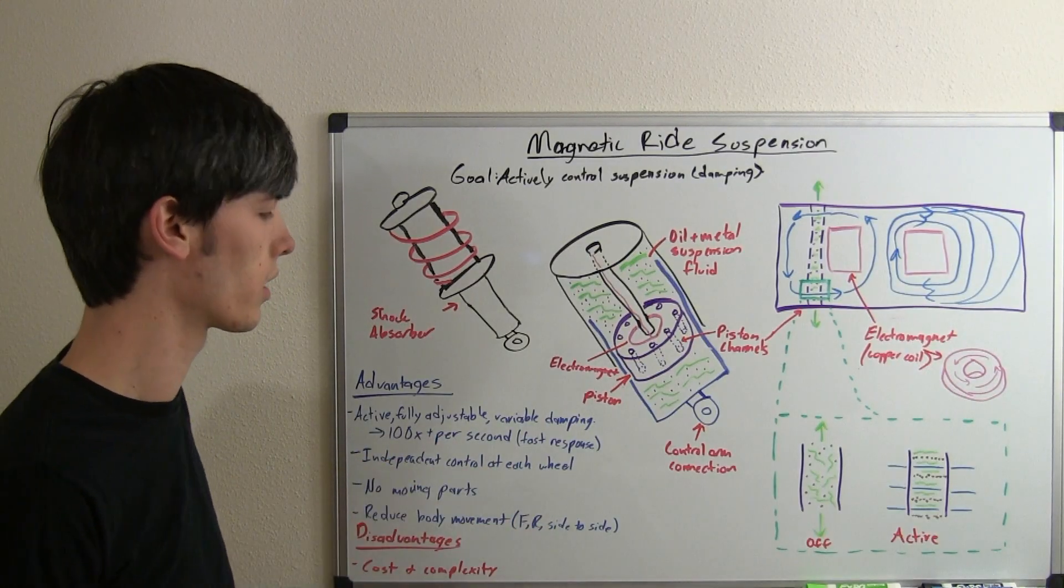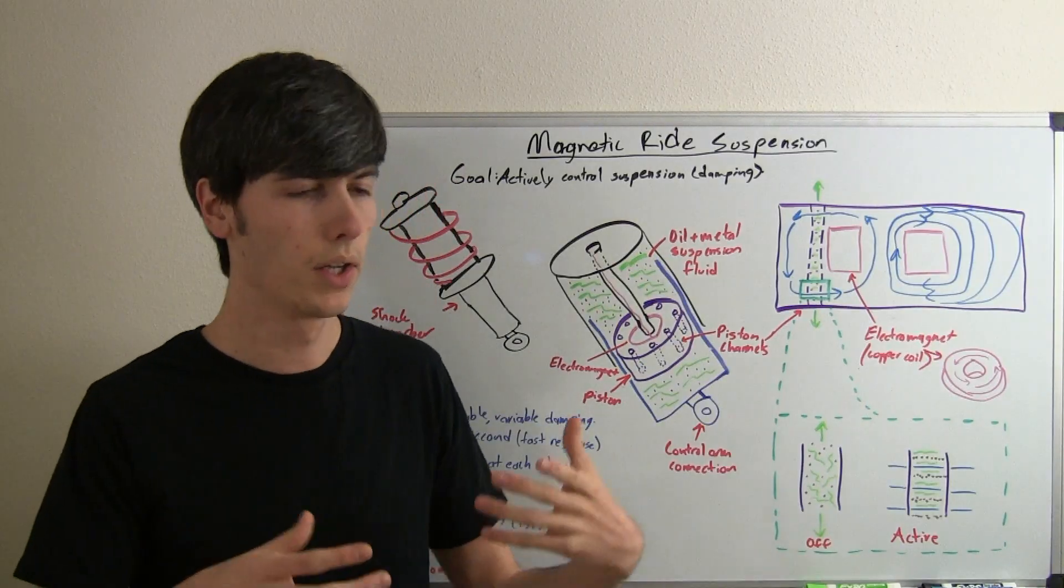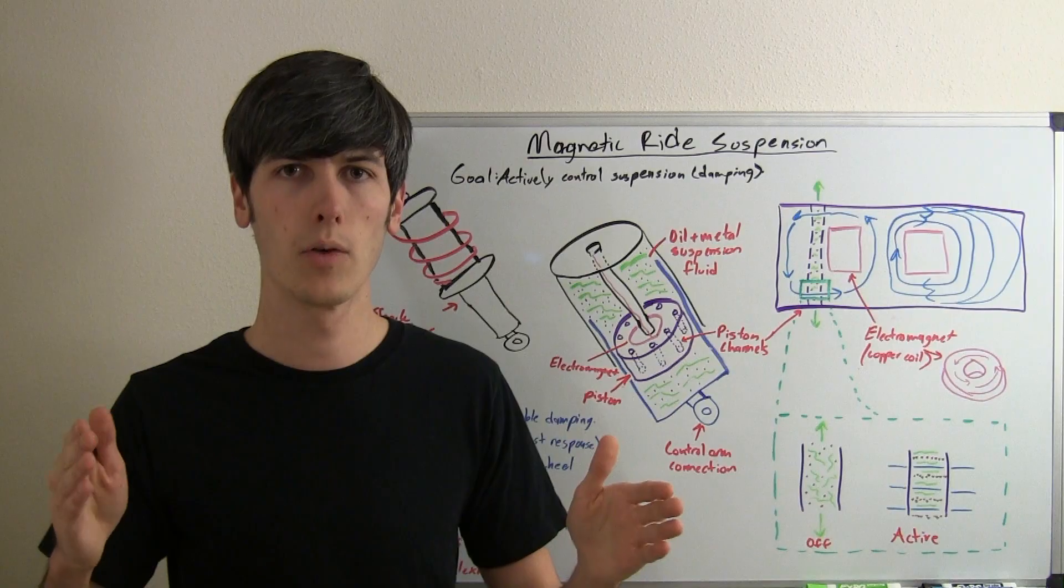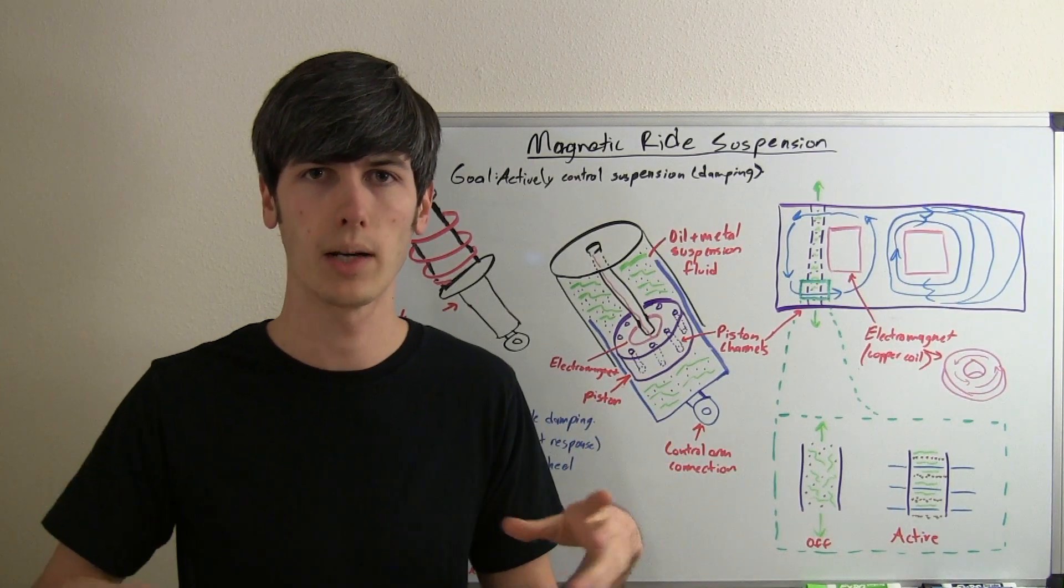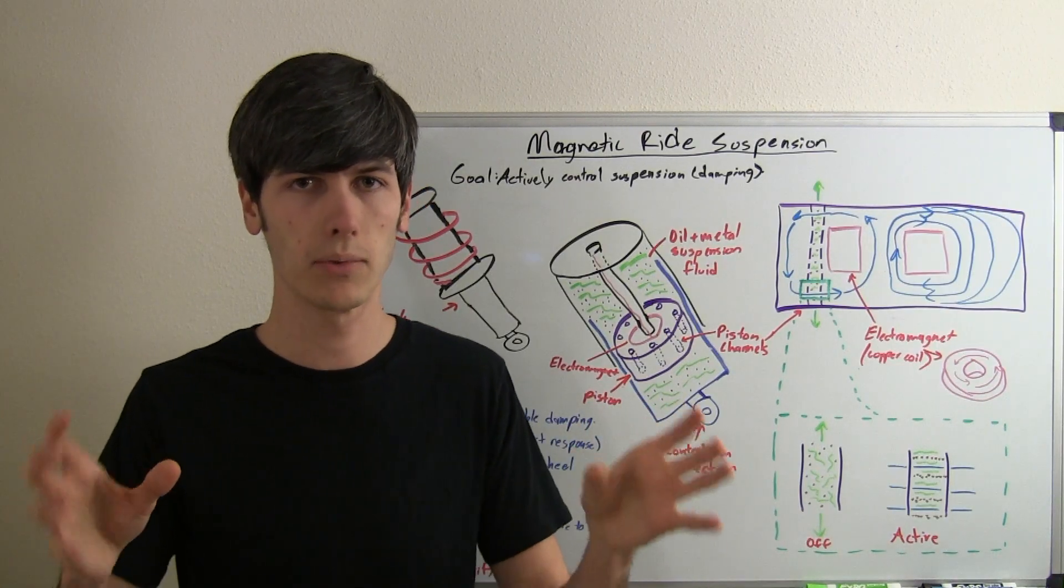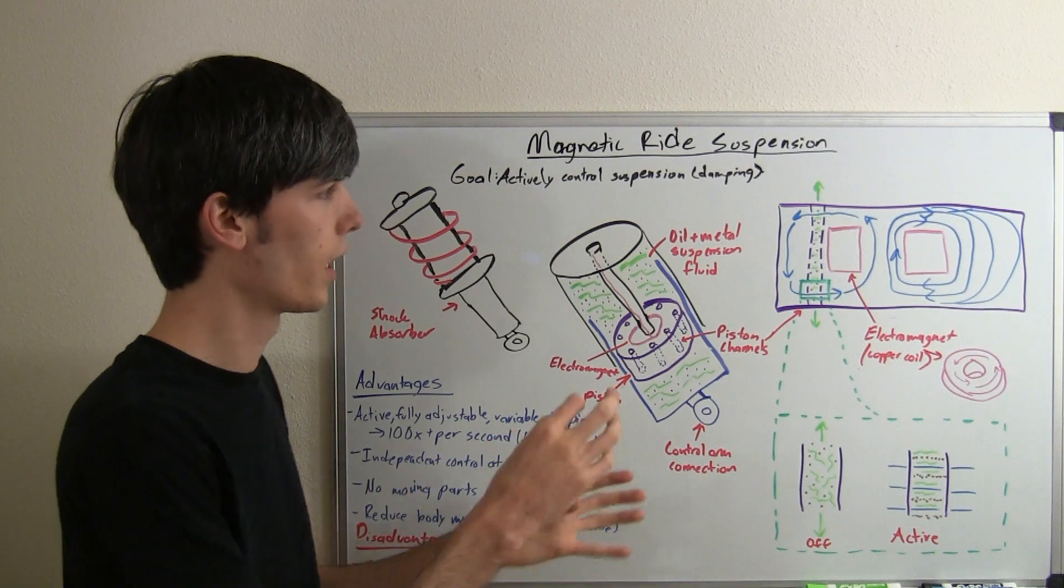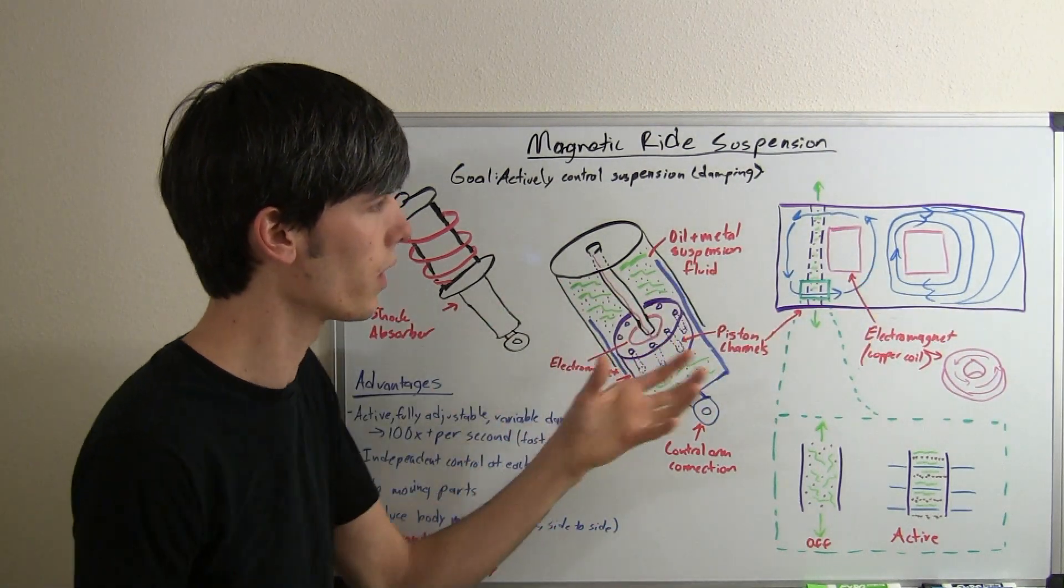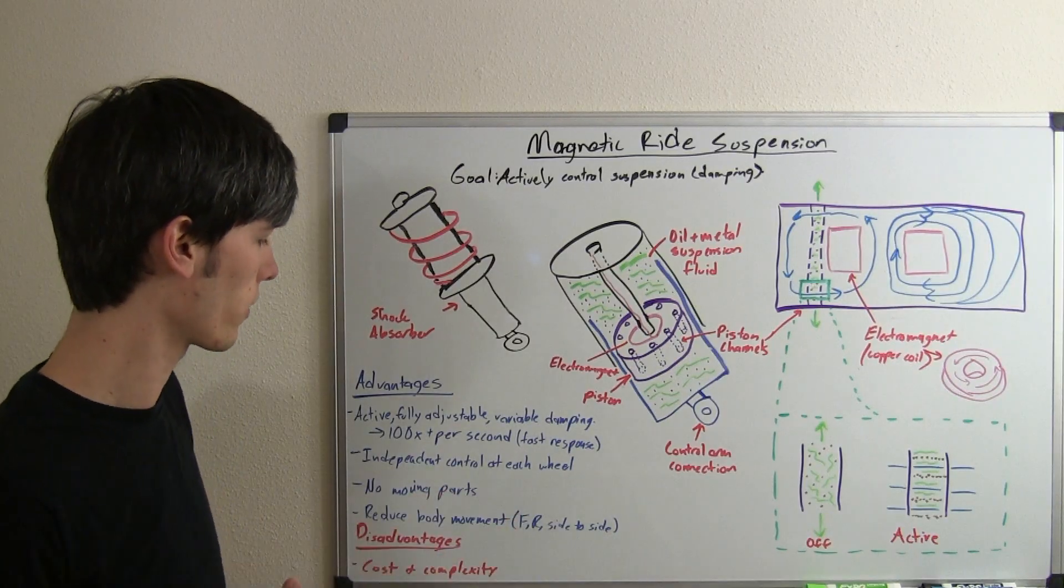Also, you have independent control at each wheel. So, rather than having a setup where all four of your wheels are doing the exact same thing no matter what feedback they're getting like one's hitting a bump and one isn't, they're all going to have the same setting. Whereas, this can change the voltage going to each individual wheel. So, you can individually control that suspension.